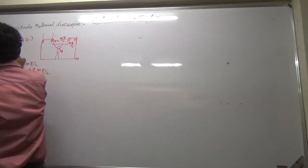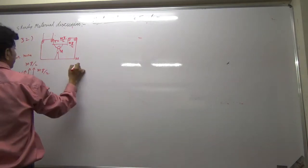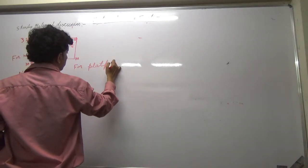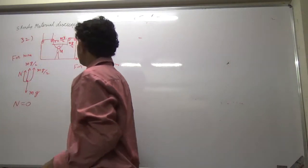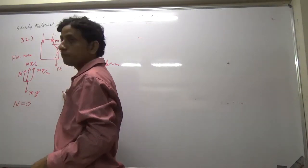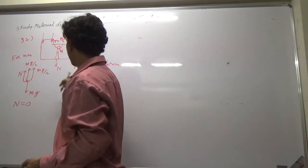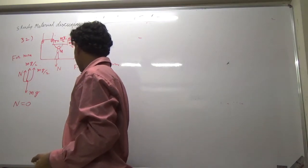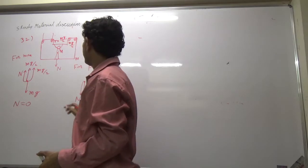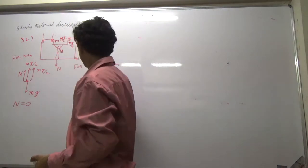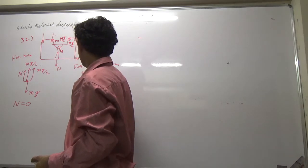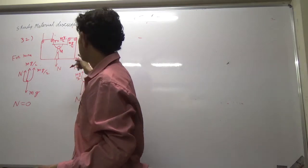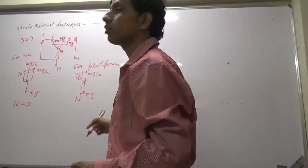Now write the forces on the platform. This is the weight of the platform. The normal force exerted by the man on the platform. And two strings are pulling it upward, Mg by 2 and Mg by 2. There are two equal forces from two ropes acting in upward direction on the platform.